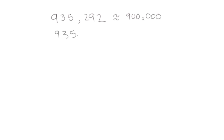Now let's look at the same number but rounding to the 10,000 place value. The 900,000 stays the same. The 10,000s can stay at 3 ten-thousands or round up to 4 ten-thousands — so 930,000 versus 940,000. Since 935,000 would be the midpoint and our number is a little larger than that, we would round up to 940,000.